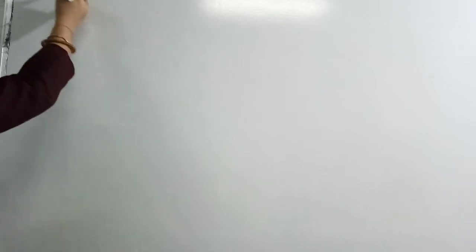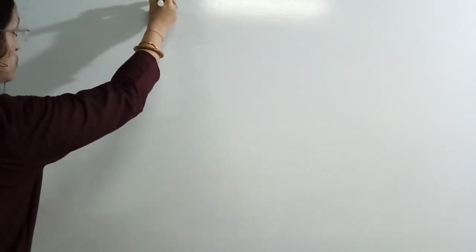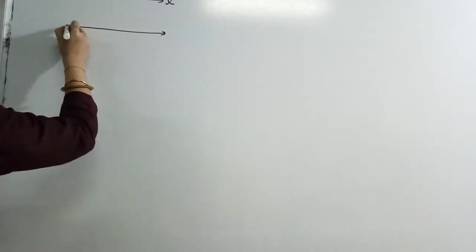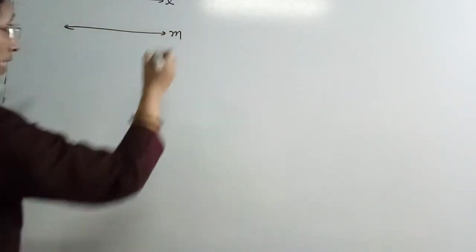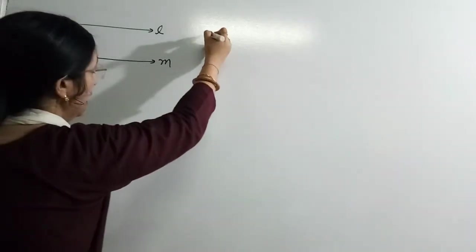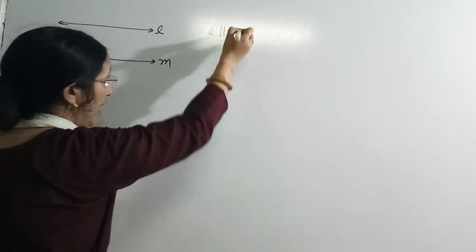See students, now I am teaching you some important points related with the parallel lines and transversal. When two lines L and M are there, we consider that L and M are parallel — we are assuming this, L is parallel to M.